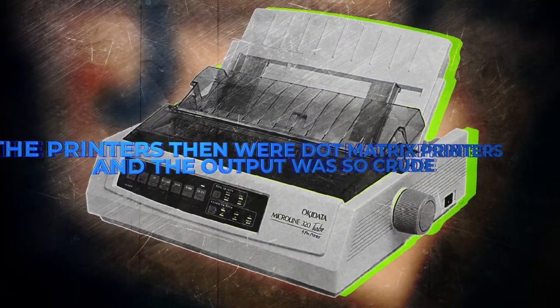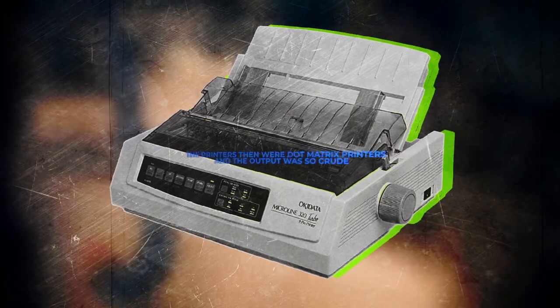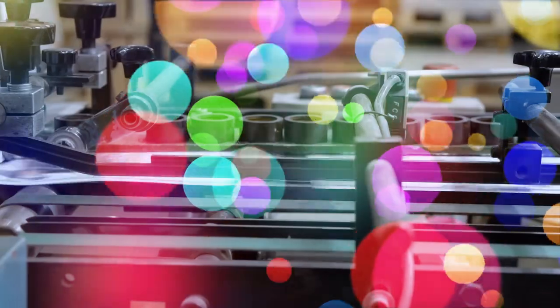Before we go further, let us explain how printing works in those times. The printers then were dot matrix printers, and the output was so crude. Every line, shape, or character printed had to be in a grid of dots. As you can imagine, typography was one of the major problems with this printer's output. The fonts would not appear on the printers as typed on the computer.